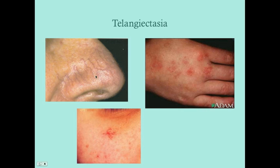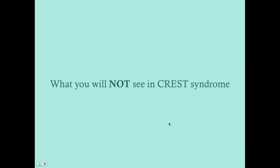Telangiectasia is just visible micro-capillaries. Here's one below the eye and then on the hands. These are all things you should be looking for when a patient presents with Raynaud's phenomenon.